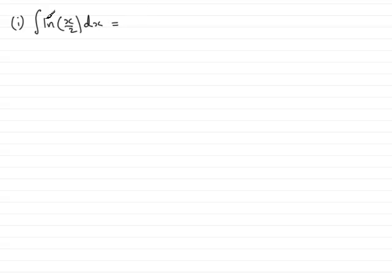It doesn't look like we've got a product of two functions here, but what we do is we introduce a 1, 1 times the natural log of x over 2, integrating with respect to x.